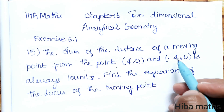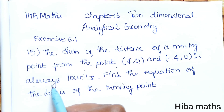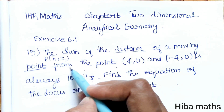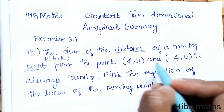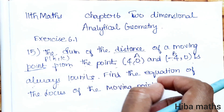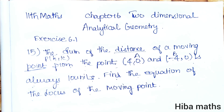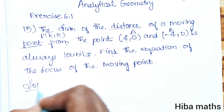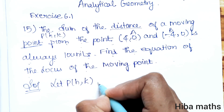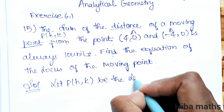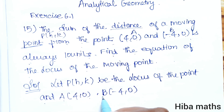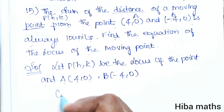The problem: the sum of the distances of a moving point from the point (4,0) and (-4,0) is always 10 units. Let the moving point be P(h,k). Find the equation of the locus of the moving point.